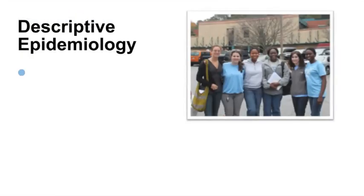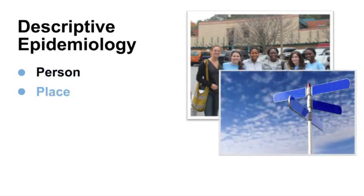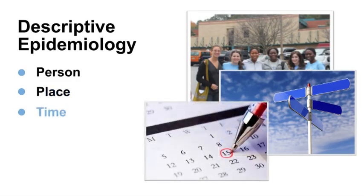Descriptive epidemiology refers to characteristics of persons, such as age, sex, race, and socioeconomic status; characteristics of place, such as country, province, state, city, zip code, or census track; and characteristics of time, such as long-term trends or short-term variations by week or day. When we ask what is the distribution or pattern of a disease or health outcome in the population, we are talking about descriptive epidemiology.